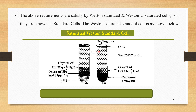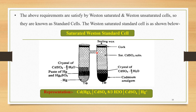How to represent this cell? This cell is represented by the convention: Cd(Hg)(x) | CdSO₄·(8/3)H₂O | CdSO₄ | Hg⁺. At the left-hand side, the negative electrode is there — the cadmium amalgam. This is the representation of the saturated Western standard cell, which is considered a standard cell.